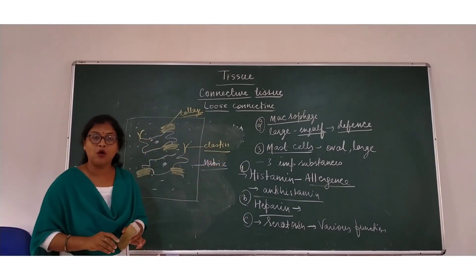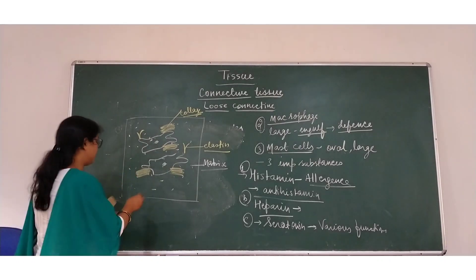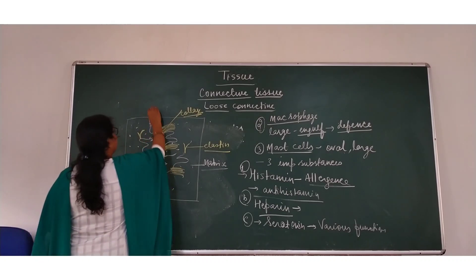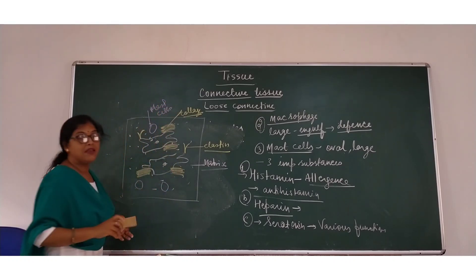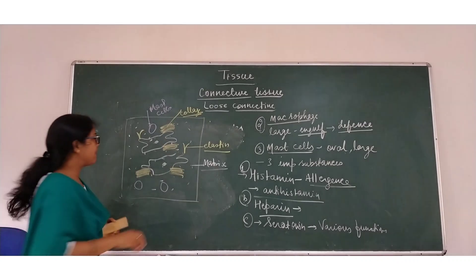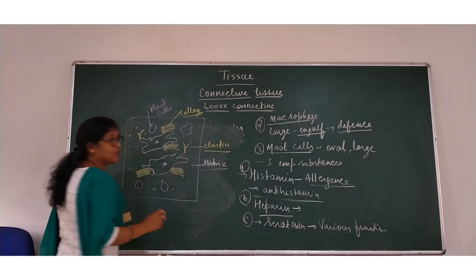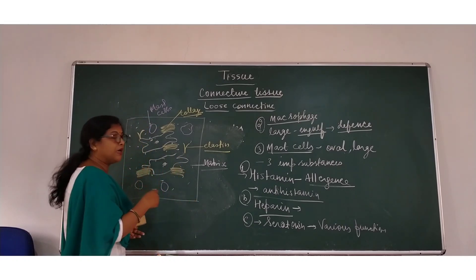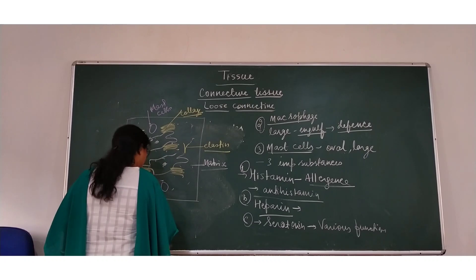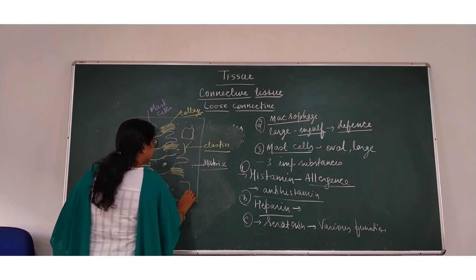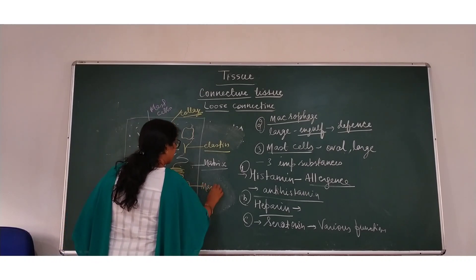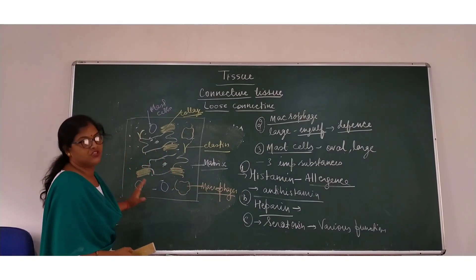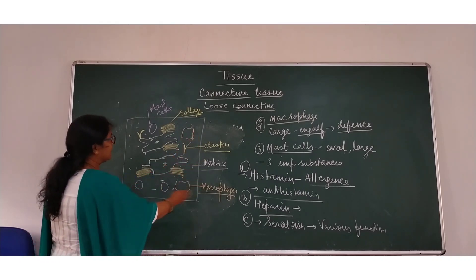Two more kinds of cells are found in the areolar tissue. Mast cells are oval in shape and are shown accordingly in the diagram. Macrophages are irregular in shape — they are also known as phagocytic cells and engulf foreign particles. This is the complete diagram of areolar connective tissue showing all kinds of cells.